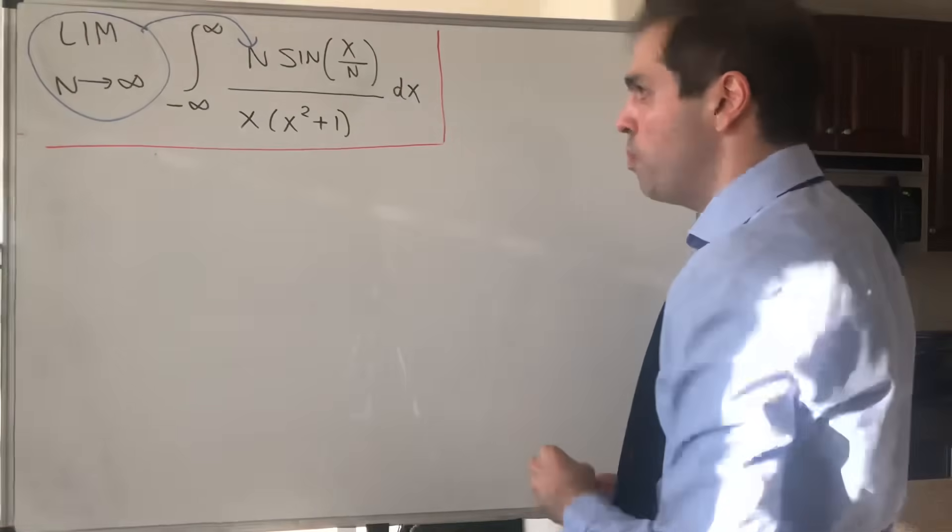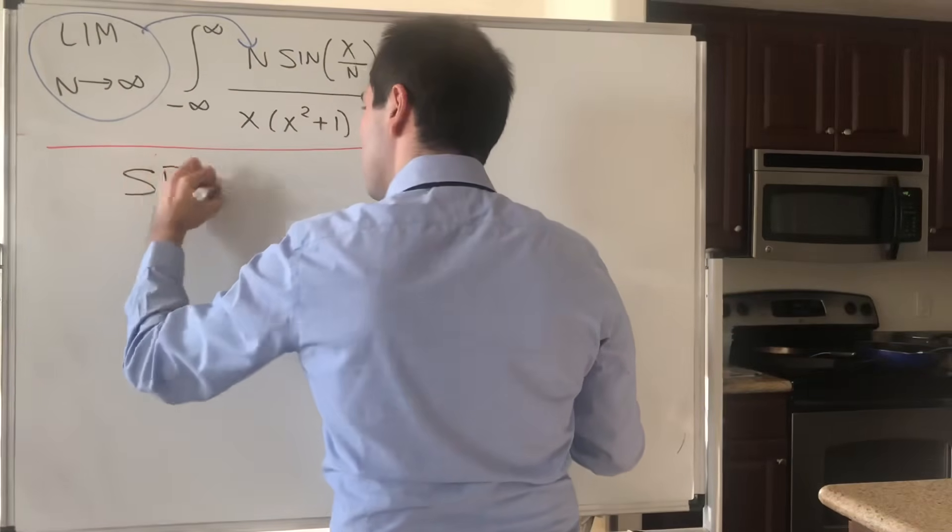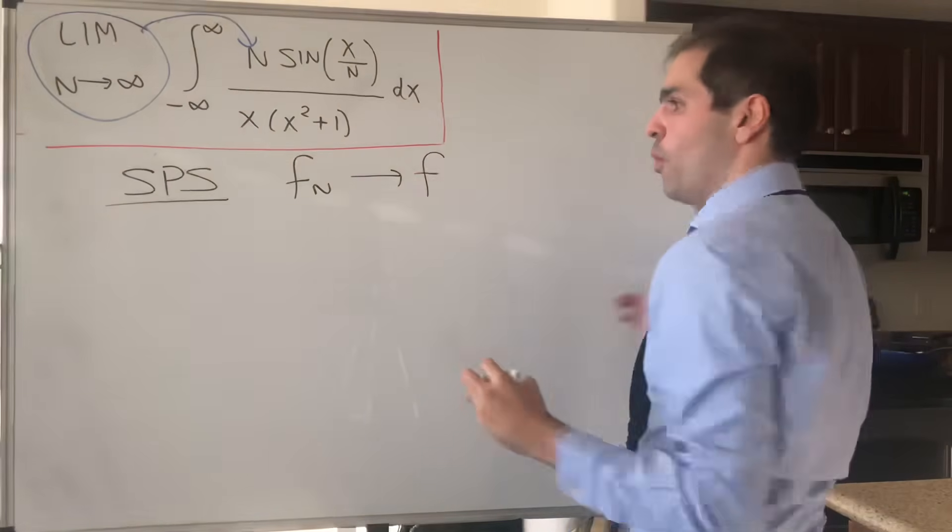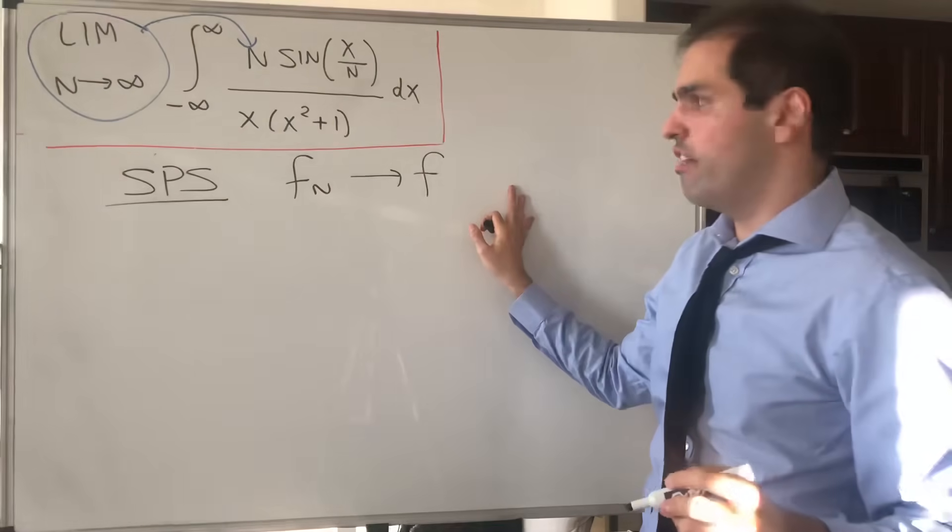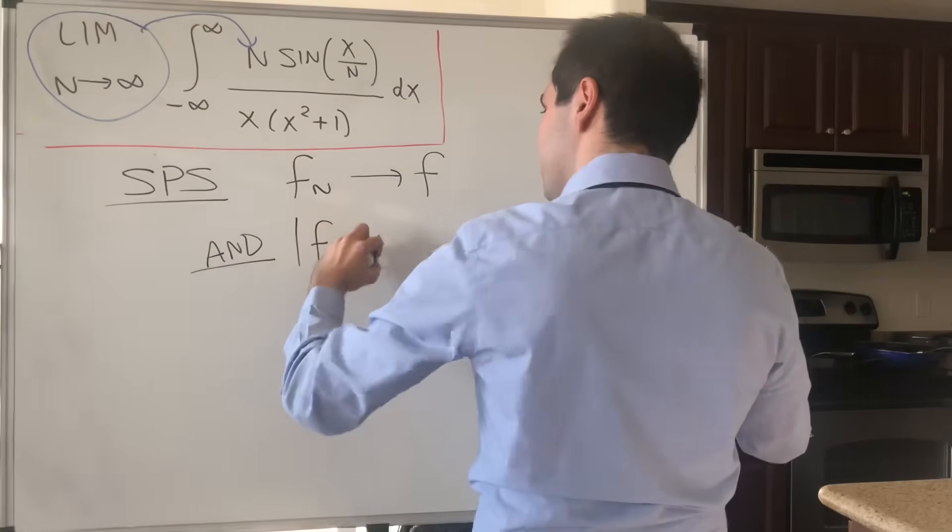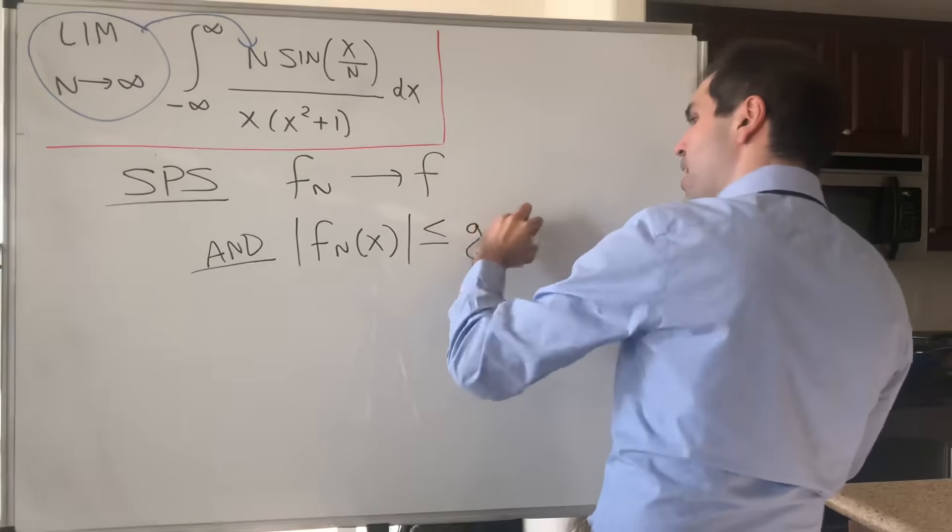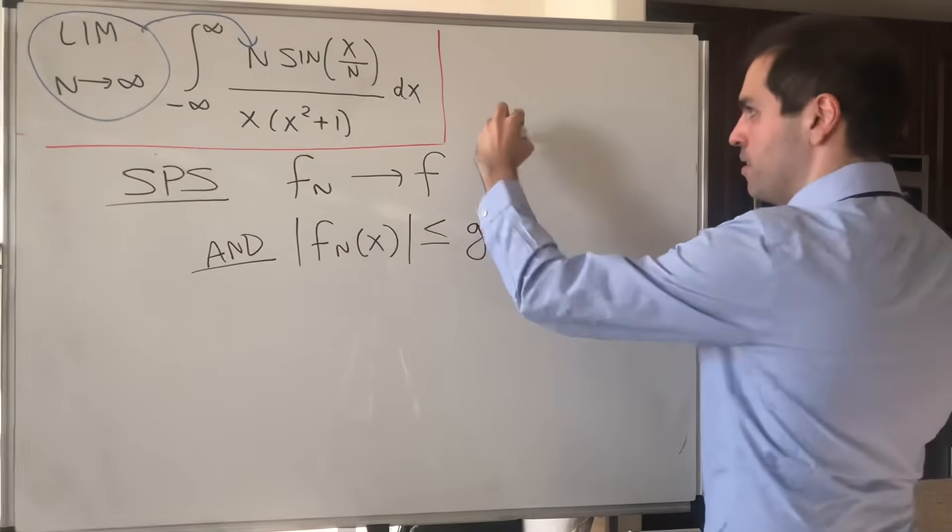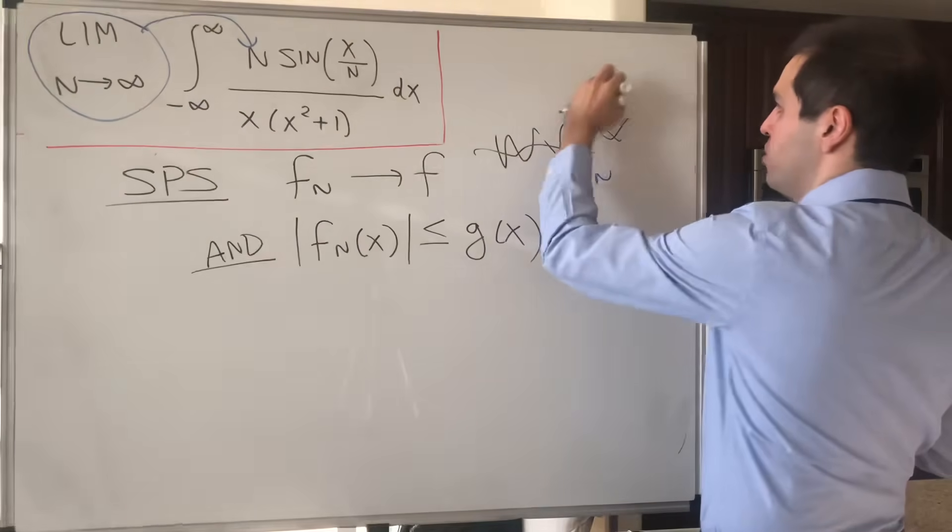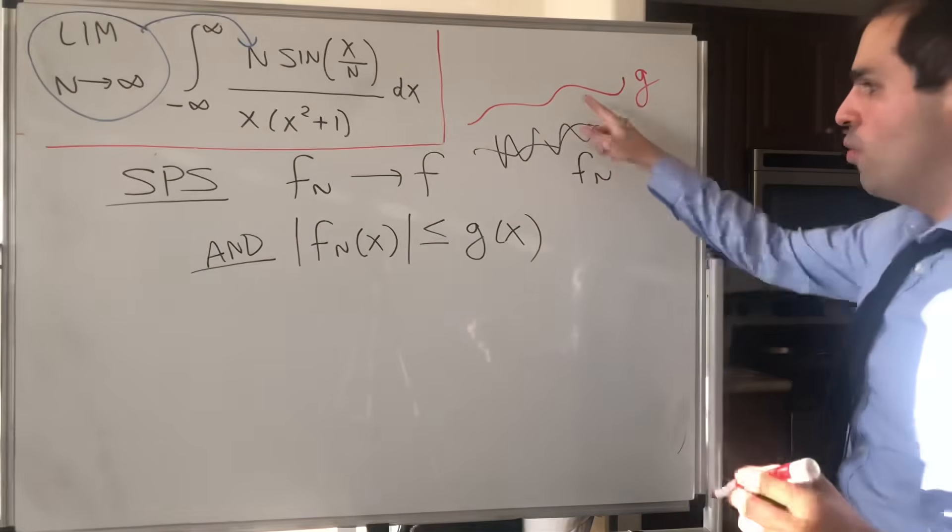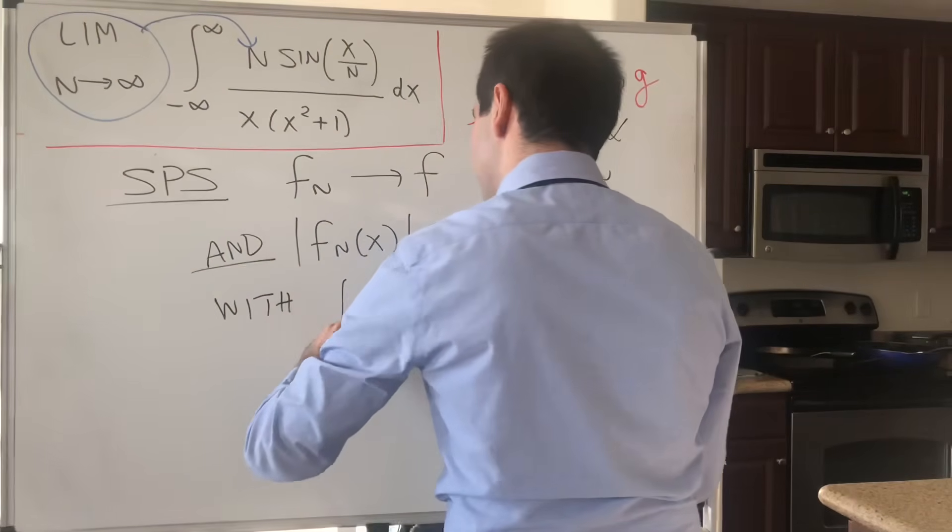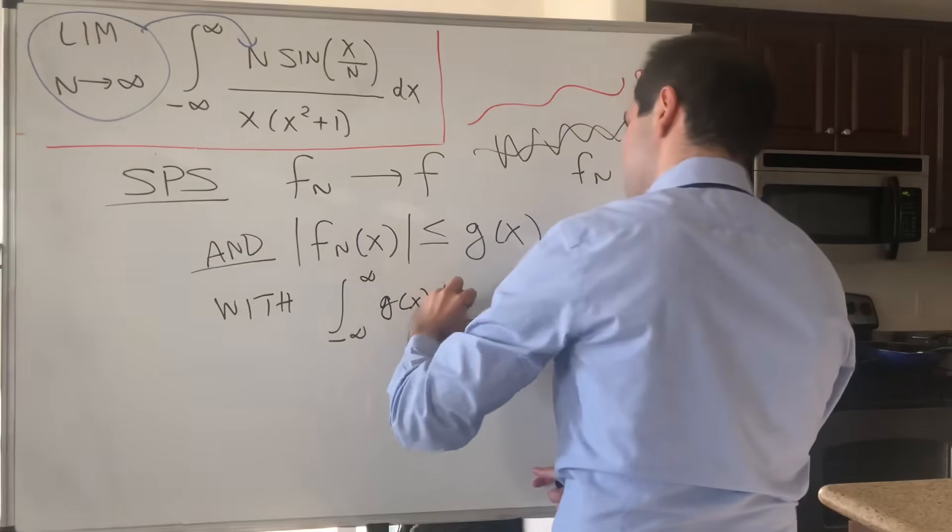And it says the following. Suppose you have a sequence of functions fn that converges to f pointwise. So fn of x goes to f of x. And moreover, the fn's are dominated by a function g that is integrable. So suppose you have some functions fn that are dominated, or less than or equal, by a function g, where g is integrable. So the integral of g is finite.